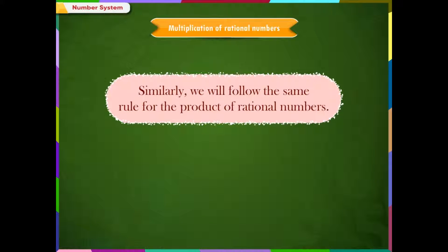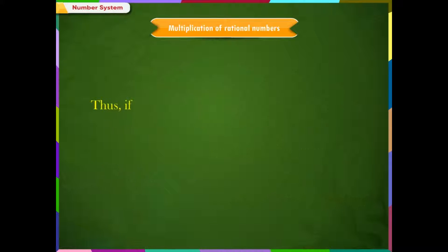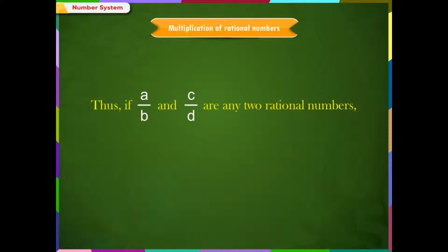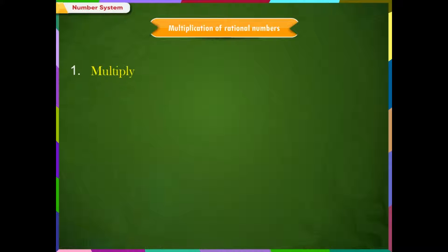Therefore, the product of two rational numbers equals the product of their numerators divided by the product of their denominators. Thus, if a/b and c/d are any two rational numbers, then a/b multiplied by c/d equals (a×c)/(b×d). Let us understand multiplication with the following examples.